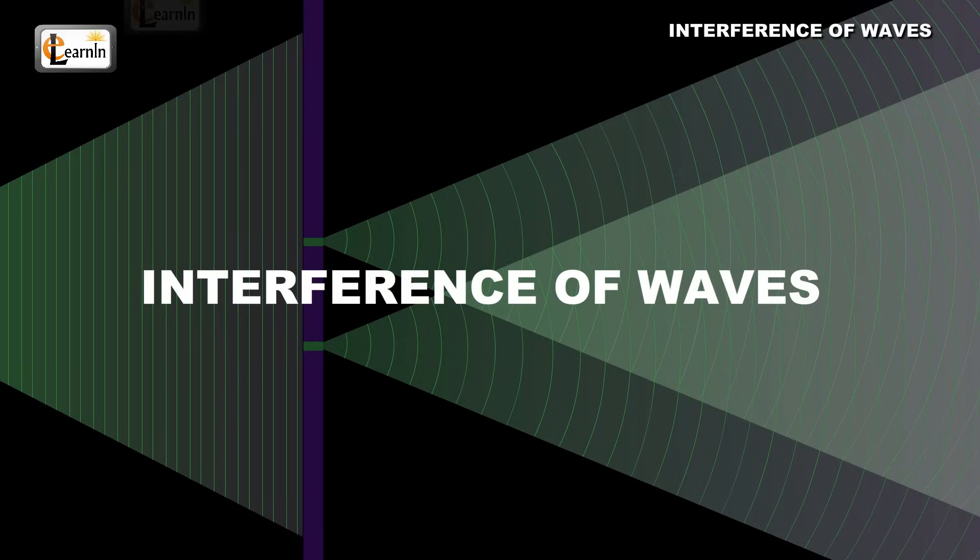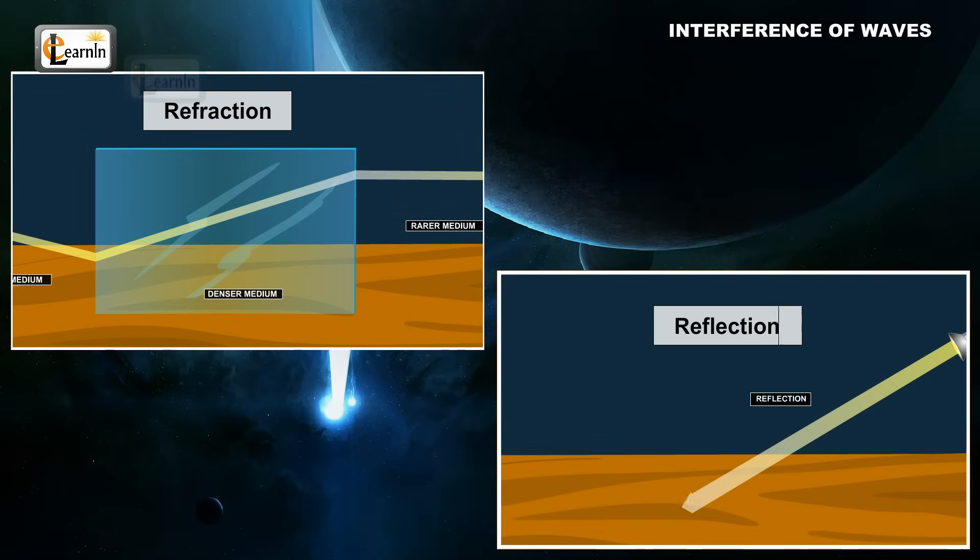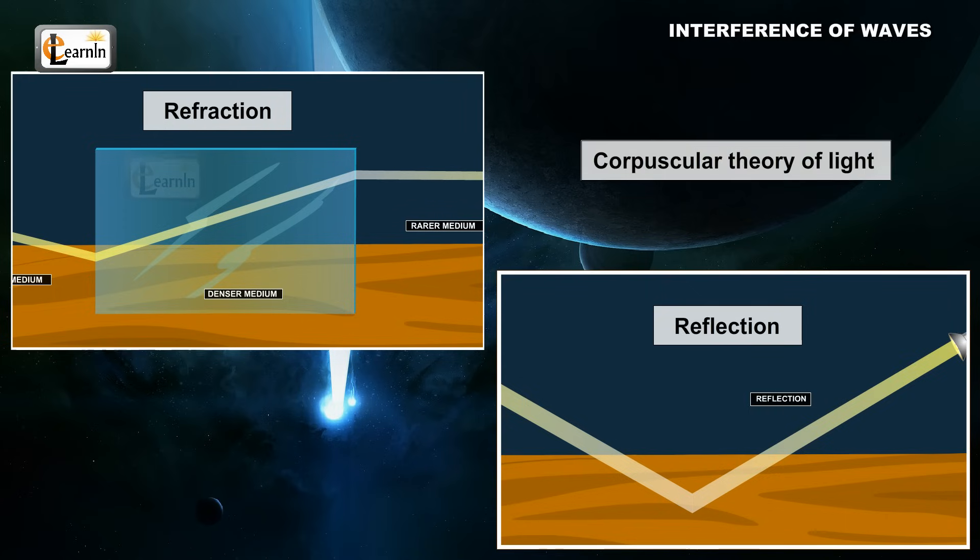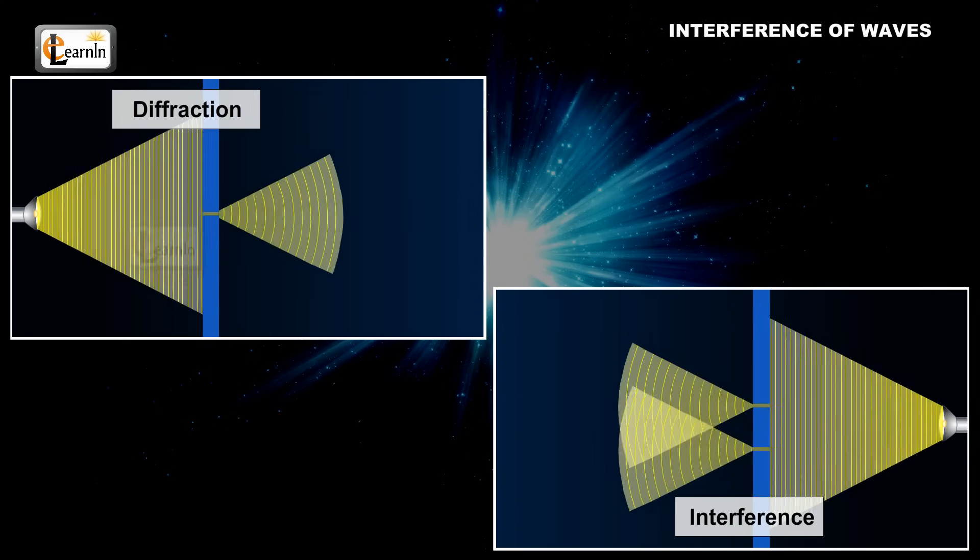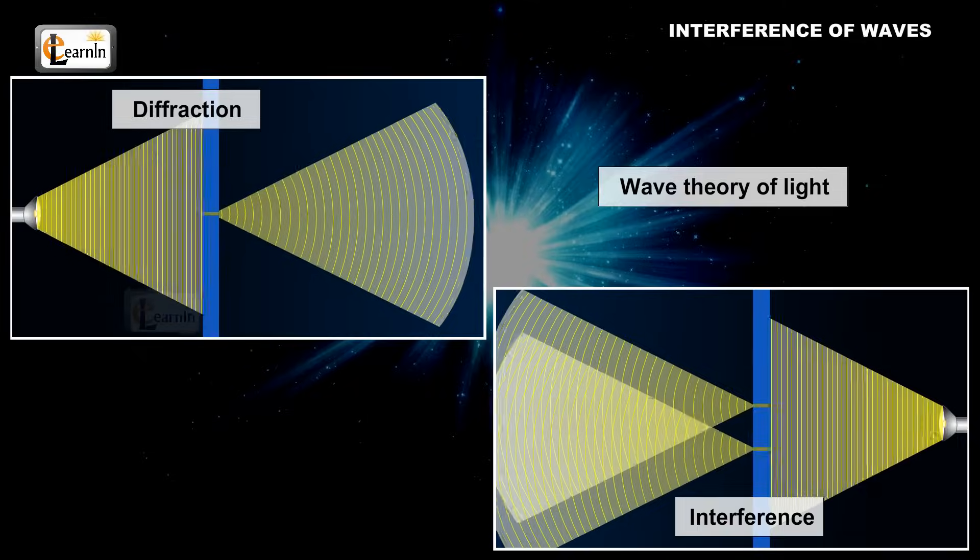Interference of waves. The phenomena of light which undergoes refraction and reflection can be explained by the corpuscular and wave theory of light, but some phenomena such as interference and diffraction can only be explained by the wave theory of light.